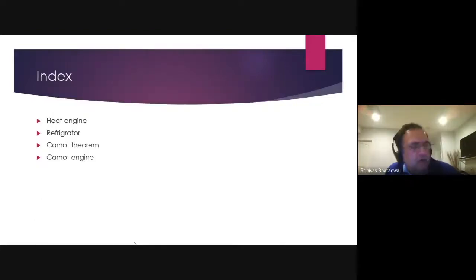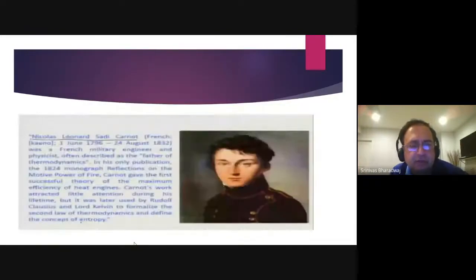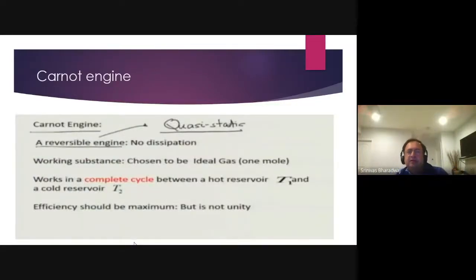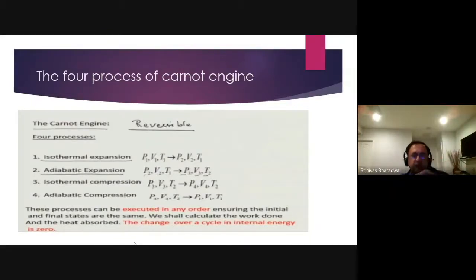Continuing on with heat engines. Today I was going to wrap up with a few questions. We already looked at Carnot — Carnot is a reversible engine, and all reversible engines operating between two temperatures have the same efficiency, which is the highest you can get. The Carnot engine has four steps: isothermal expansion, adiabatic expansion, isothermal compression, and adiabatic compression — you come back to your original state.